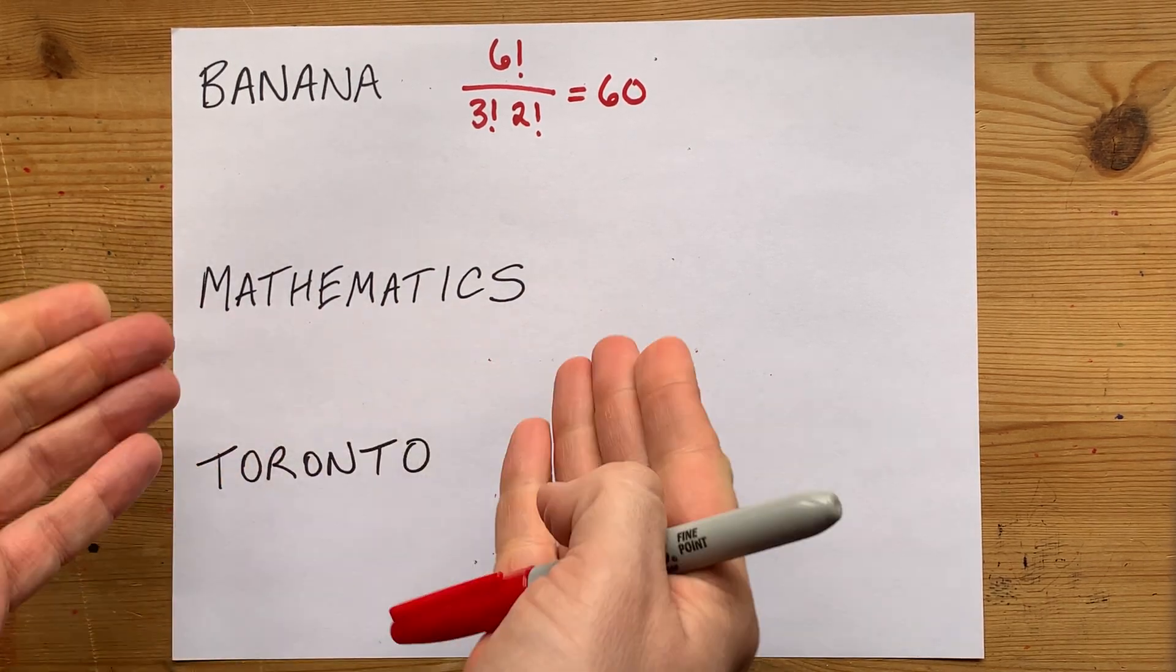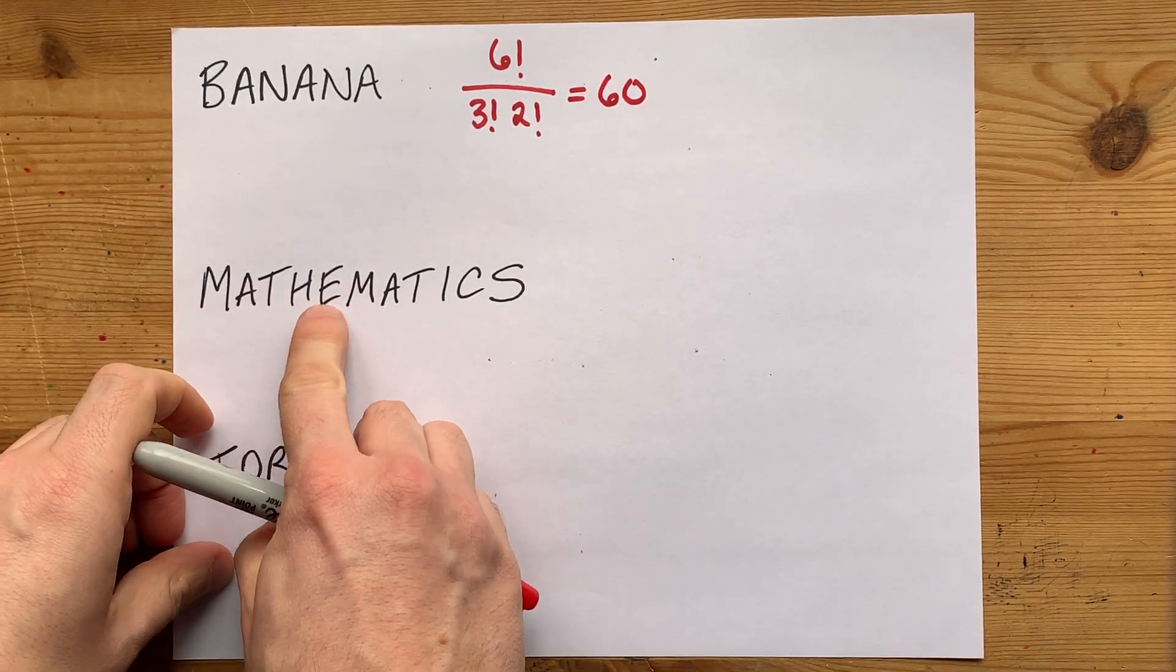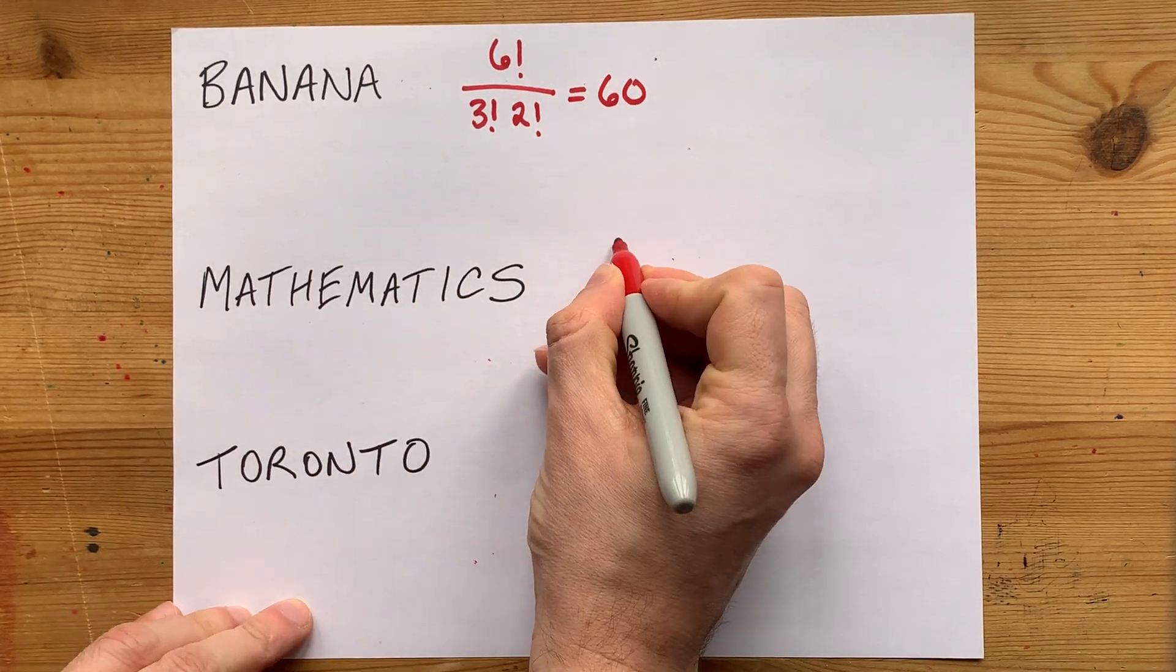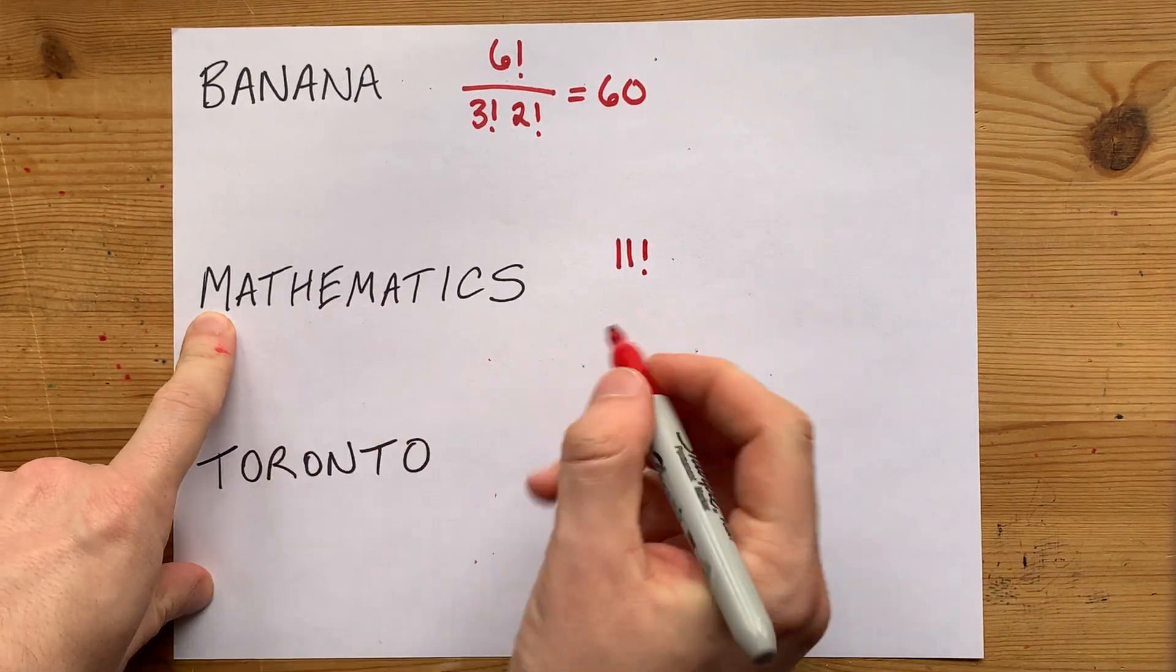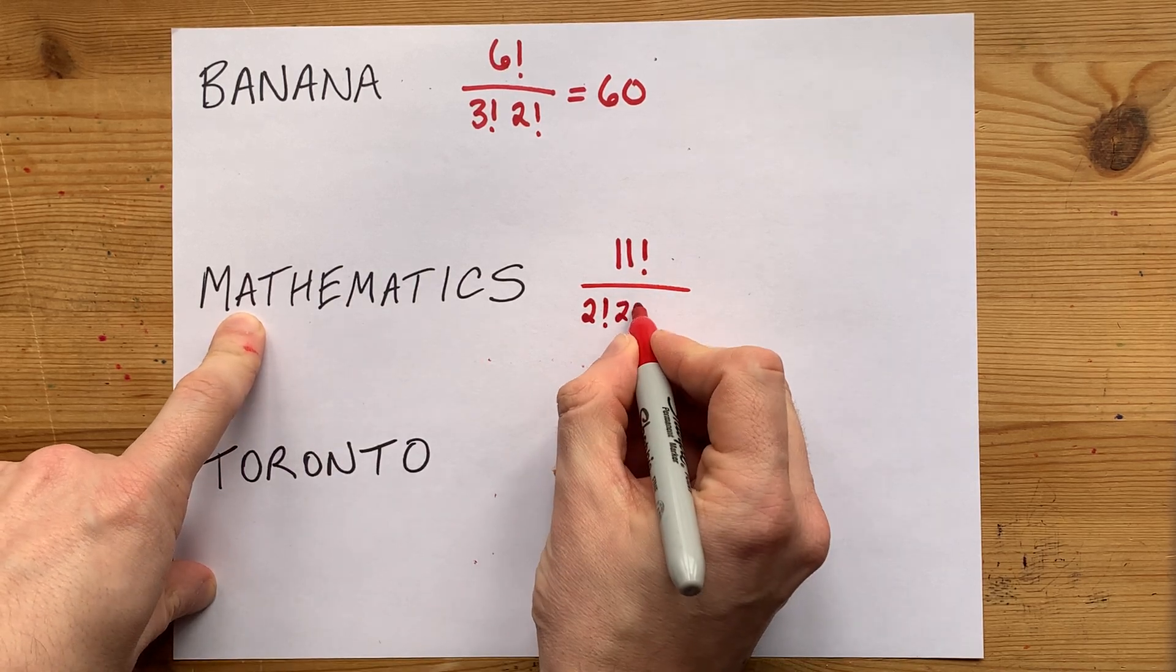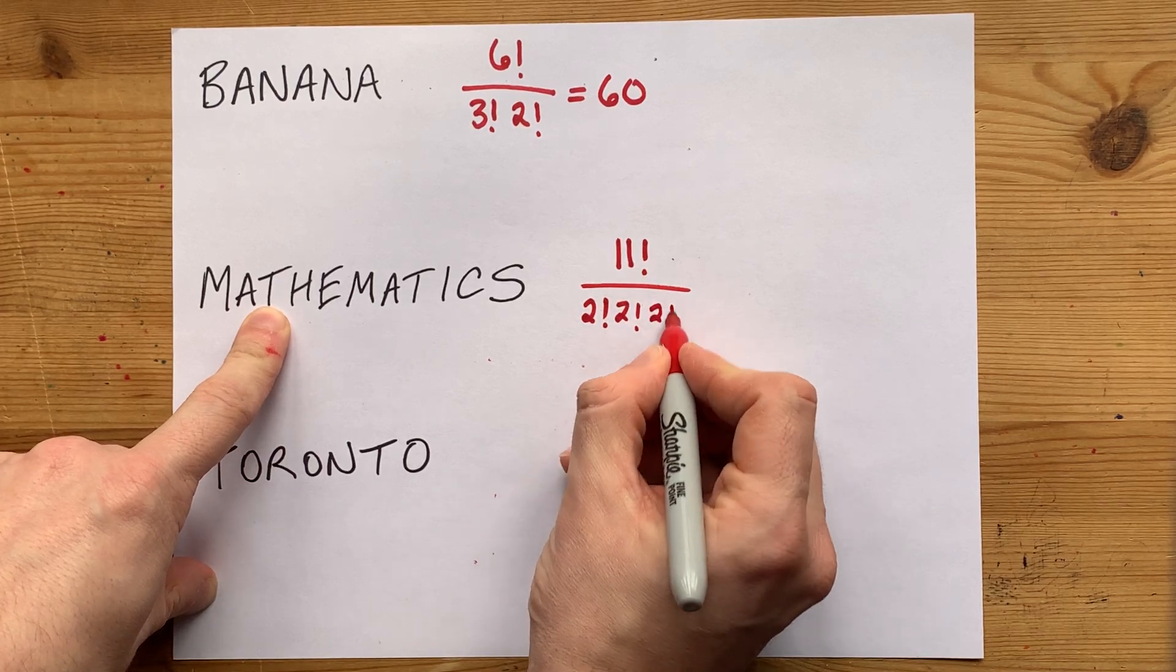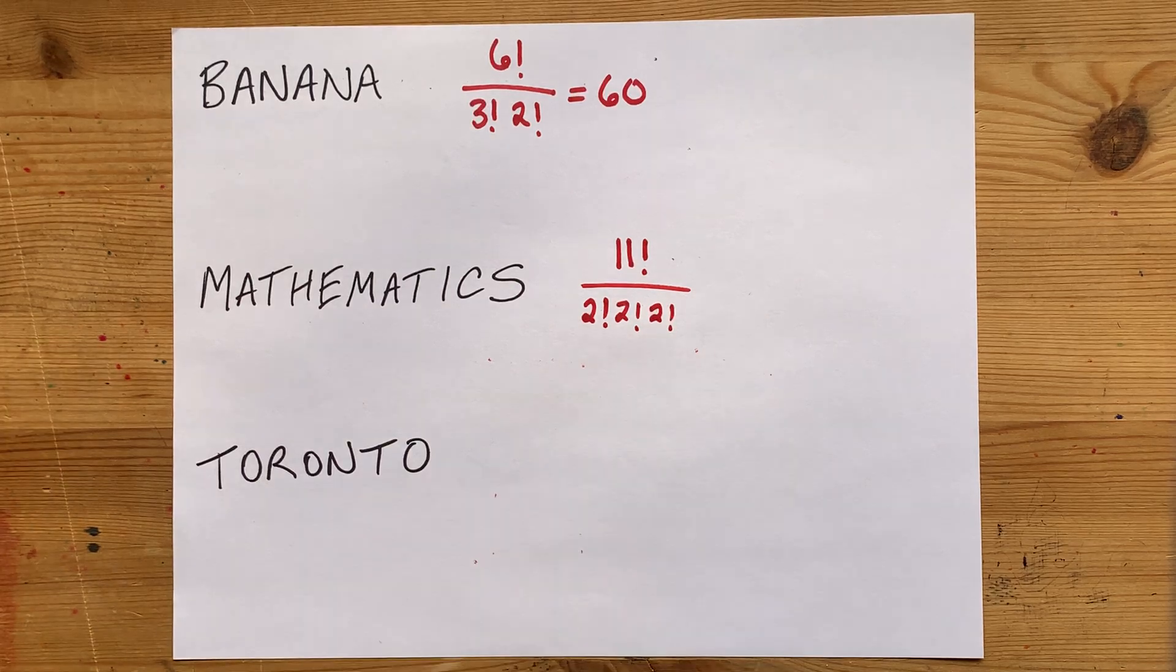Let's do the word MATHEMATICS, because some teachers love that word. Eleven letters. So that's eleven factorial in the numerator. I have two M's, so I need to divide by two factorial. I have two A's, so I have to divide by another two factorial. Two T's, that's another two factorial. And all the rest of the letters aren't duplicated.